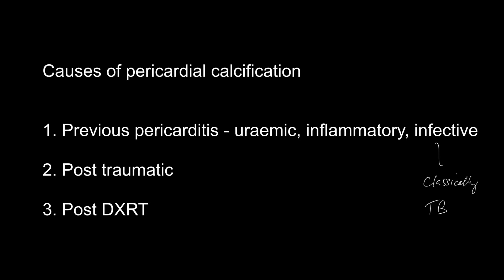There are various causes of pericardial calcification that you should know about: previous pericarditis, uremia is a common cause, so too is inflammatory — usually connective tissue disease, so SLE, rheumatoid arthritis — and infective causes such as rheumatic fever and classically TB. Don't forget that trauma to the pericardium, either during surgery or a traumatic chest injury, could lead to pericardial calcification. Post-radiotherapy can sometimes lead to focal pericardial calcification.